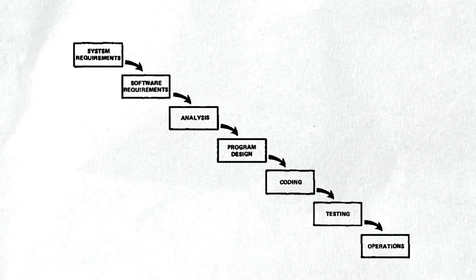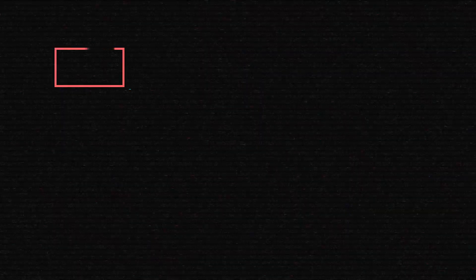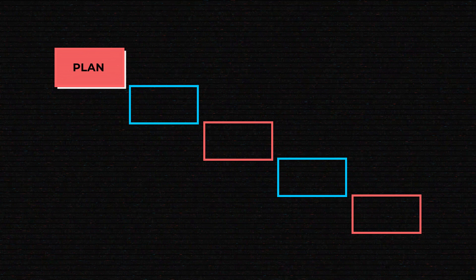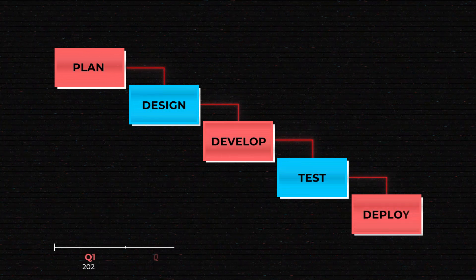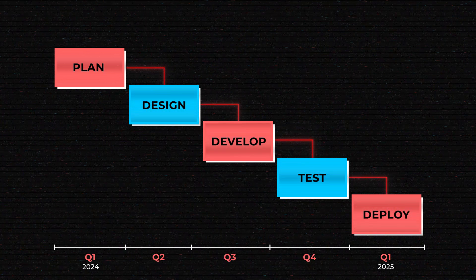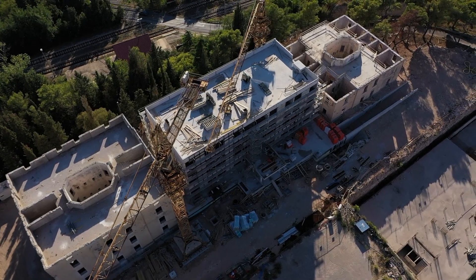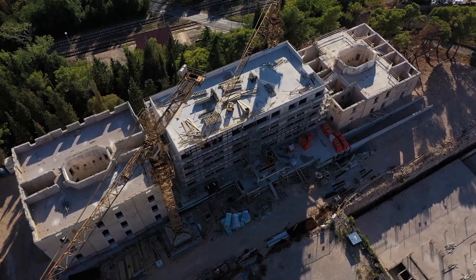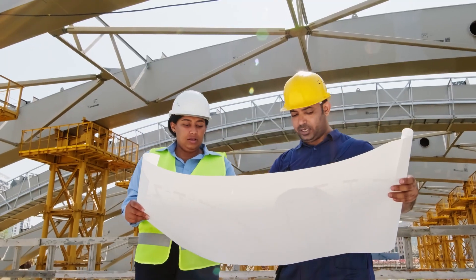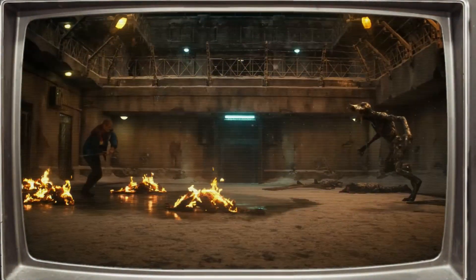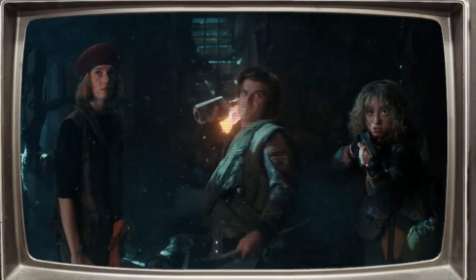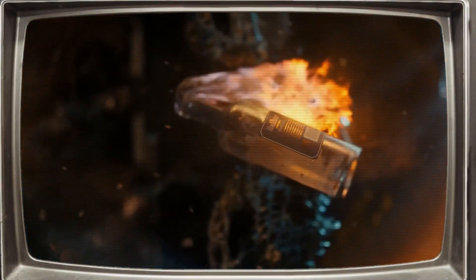Waterfall was the first software development approach described in Royce's article back in the 1970s, and it adheres strictly to the SDLC stages. The main idea is that each stage starts only after the previous one is finished. The timeline, due dates, and deliverables are clearly set. The waterfall model was borrowed from the construction and manufacturing industries. This model is very straightforward and well-defined, and the team can focus on just one phase at a time, so the project is easier to manage.